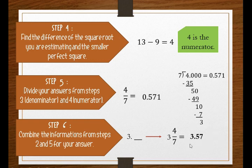This equals 3.57 to the nearest hundredth. If we multiply 3.57 by itself, 3.57 times 3.57 equals 12.74, and 12.74 rounded off equals 13.